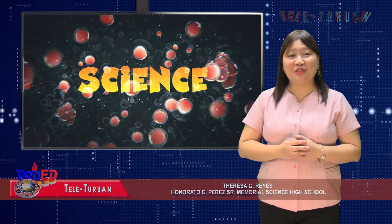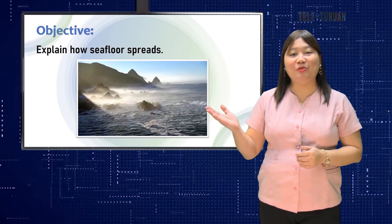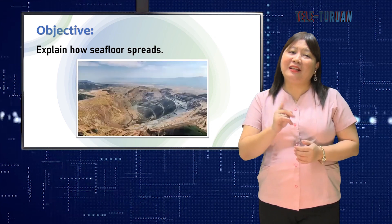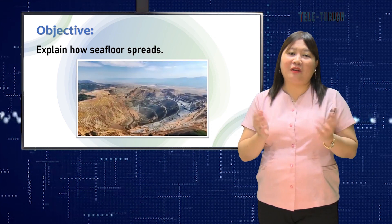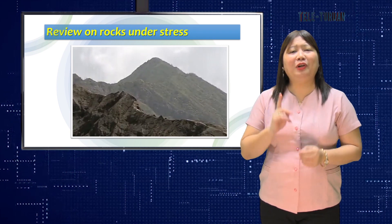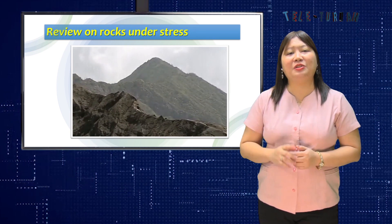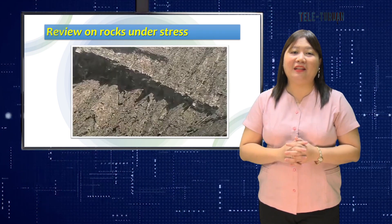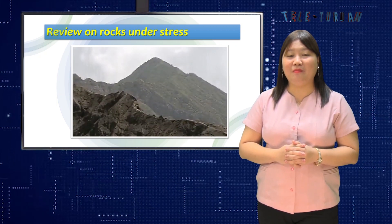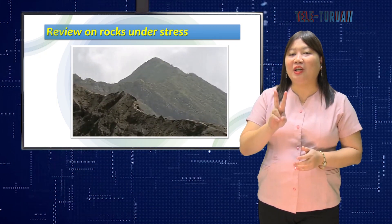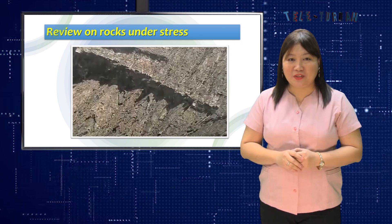Here is our objective: explain how seafloor spreads. Before that, let's recall our previous topic about how rocks responded to stresses. You have learned that tensional stress stretched and pulled rocks apart, and that occurred along divergent plate boundaries, where two tectonic plates were turned away from one another.